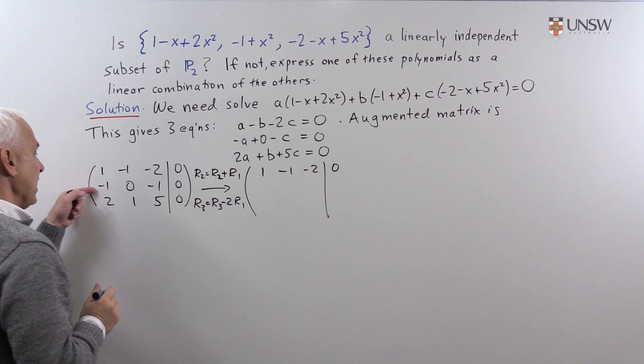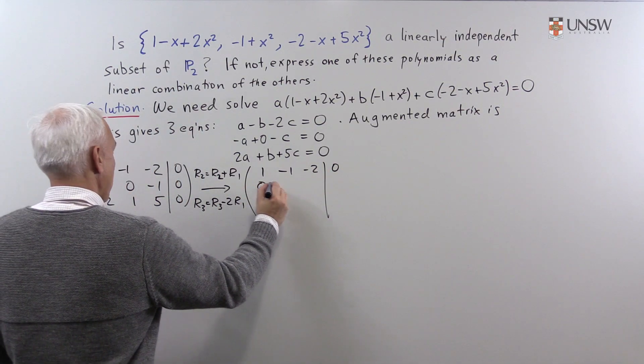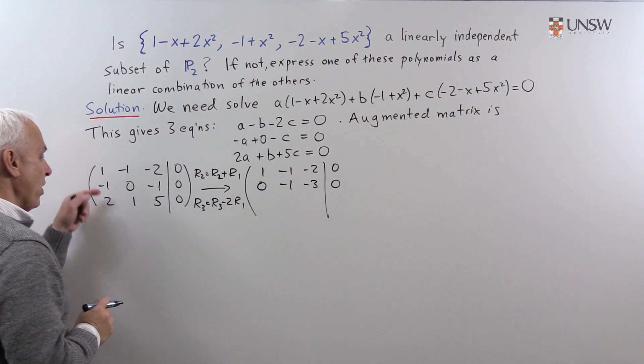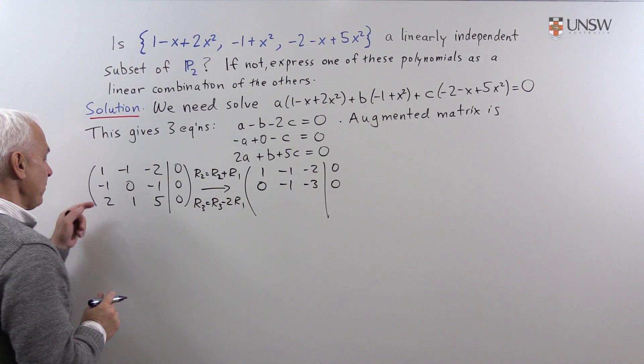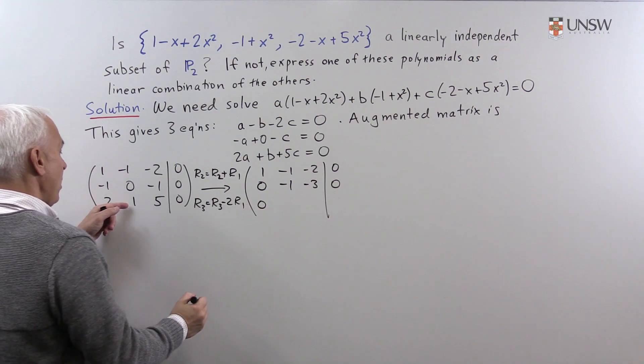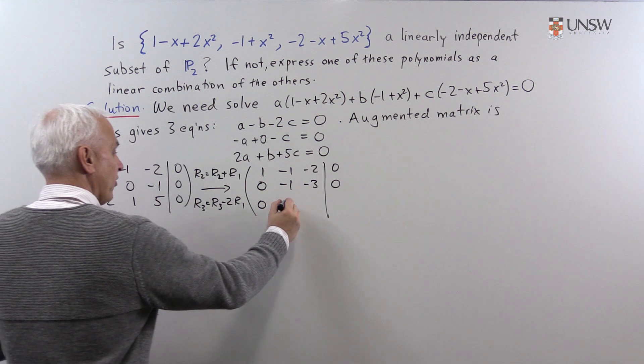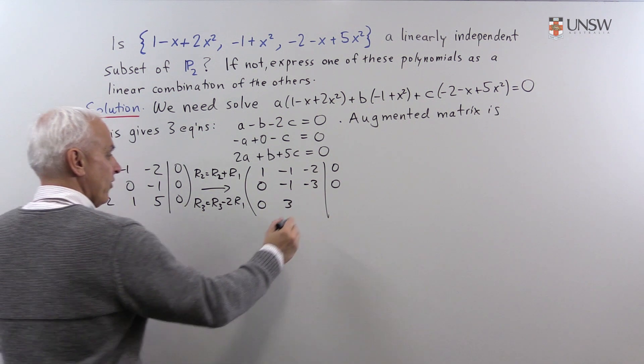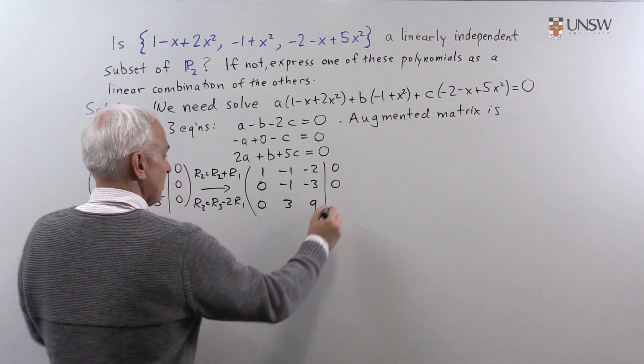Take the second row and add to it the first row. And we'll take the third row and subtract 2 times the first row, 0. 1, minus 2 times this is 3. 5, minus 2 times this is 9. And 0's on the left-hand side.